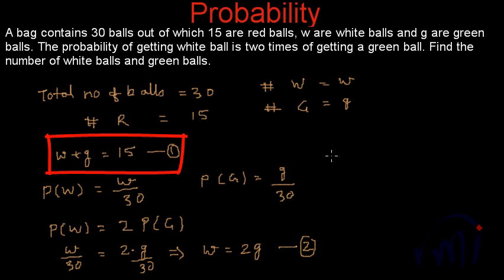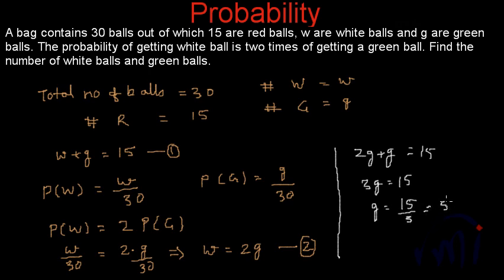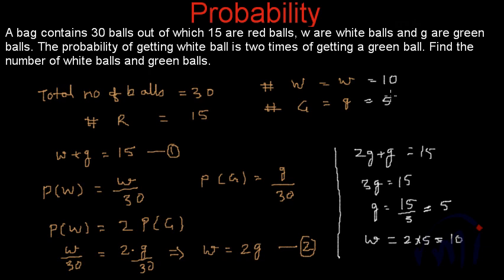Now substituting w = 2g into equation one, we get 2g + g = 15, so 3g = 15, giving g = 5. That is the total number of green balls. From equation two, w = 2g = 2 × 5 = 10. So we have the number of white balls as 10 and the number of green balls as 5.